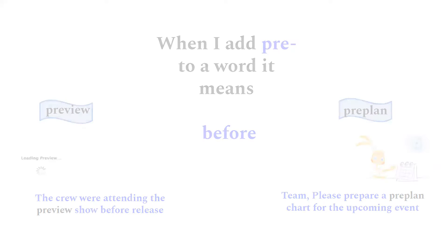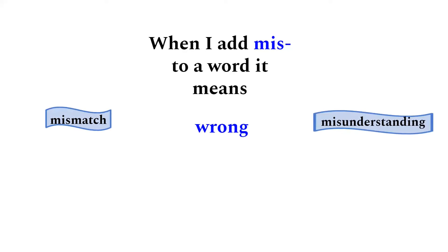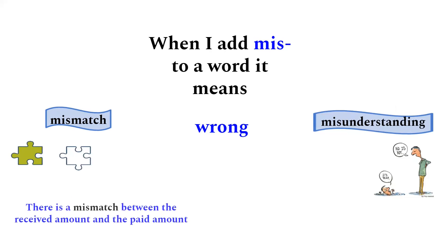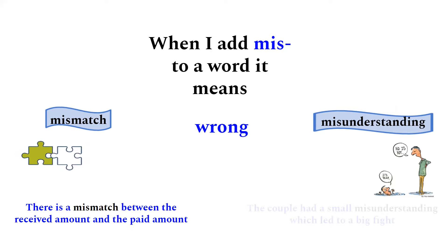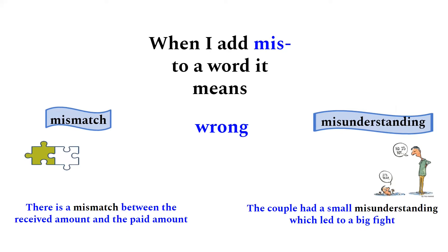When we add the prefix 'mis' to a word, it means 'wrong' — for example, 'mismatch' and 'misunderstanding.' There is a mismatch between the received amount and the paid amount. The couple had a small misunderstanding which led to a big fight.